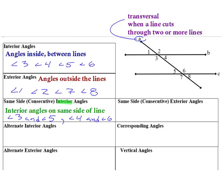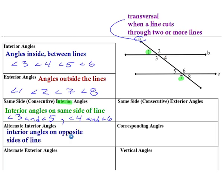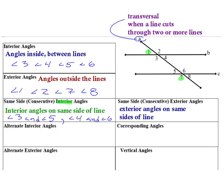Similarly, same side exterior angles follow the same concept. I have my transversal and I'm looking for exterior angles on the same side. My exterior angles are 1, 2, 7, and 8. Angles 1 and 7 are on the left side of the transversal, so those are same side exteriors. You could also say 2 and 8.